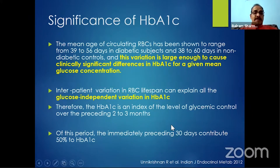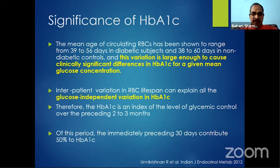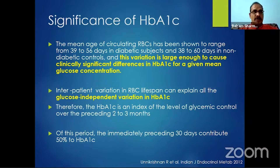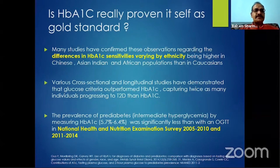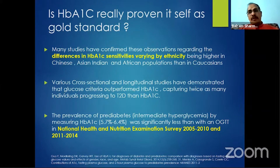HbA1C is an index of glycemic control over the last two to three months. Of those three months, the immediate last 30 days contribute nearly 50% to the HbA1C value. So is this really the gold standard we think it is?